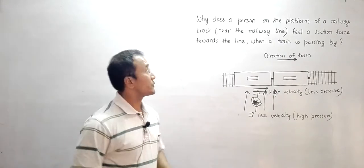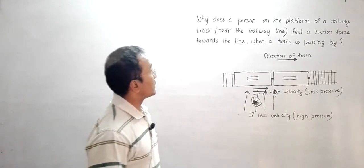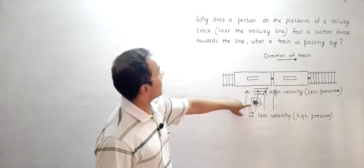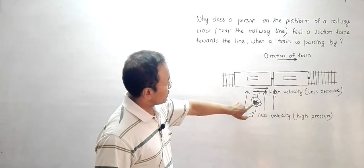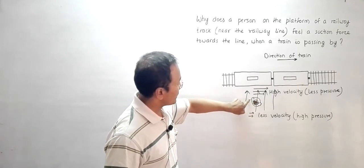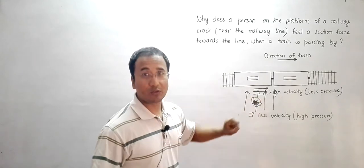Hello, the question for today is why does a person on a platform of a railway track... so this is the person on the platform of a railway track. You can see the ear, the nose here, the hands and the stomach as well.